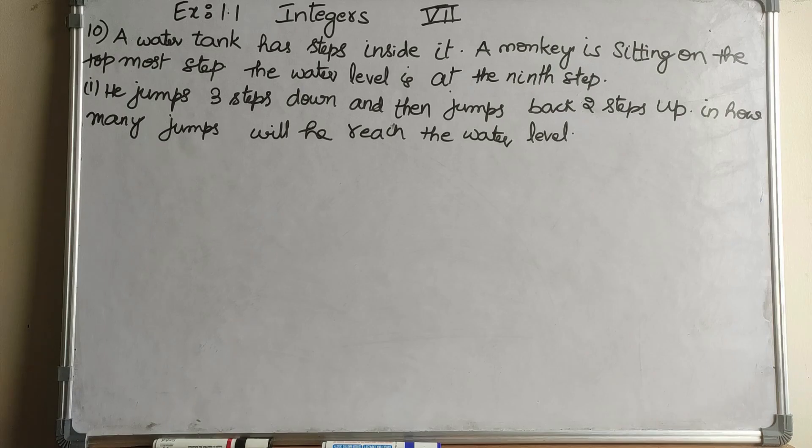7th class CBSE Maths, Integers chapter 1, exercise 1.1, question 10. A water tank has steps inside it. A monkey is sitting on the topmost step, which is the first step. The water level is at the 9th step. He jumps 3 steps down and then jumps back 2 steps up. In how many jumps will he reach the water level?